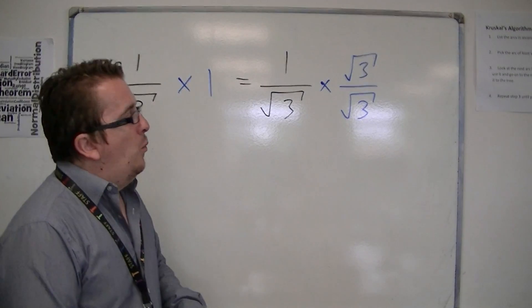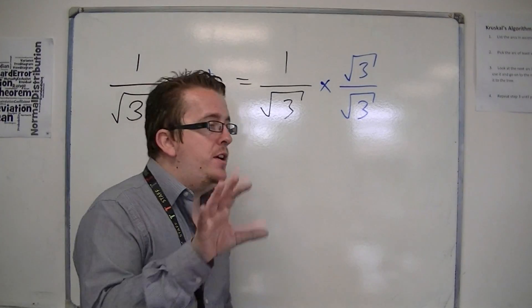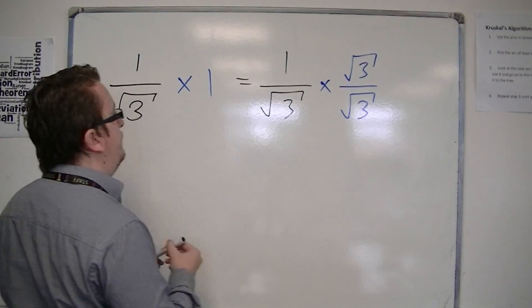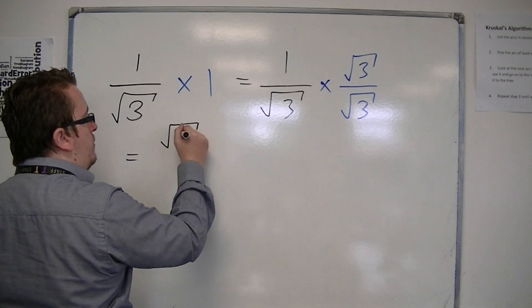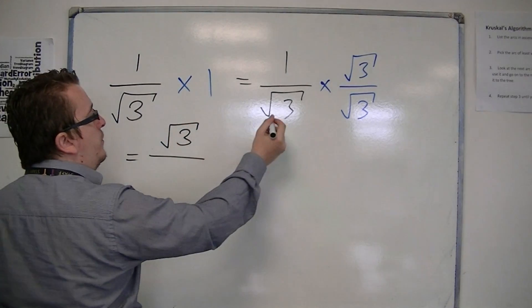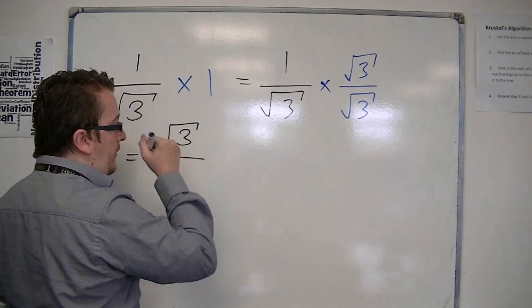Okay, but what happens now is that if I multiply this fraction by this fraction, I get 1 times root 3 is root 3, and root 3 times root 3 is 3.